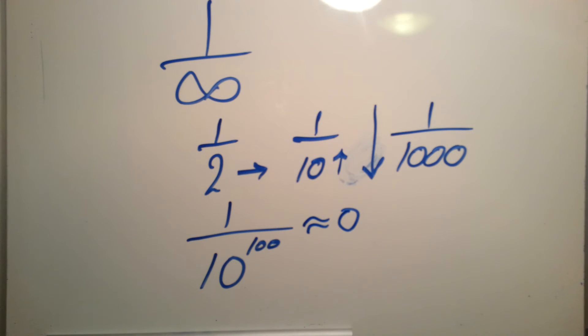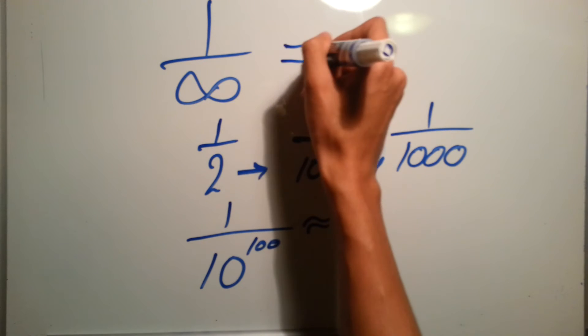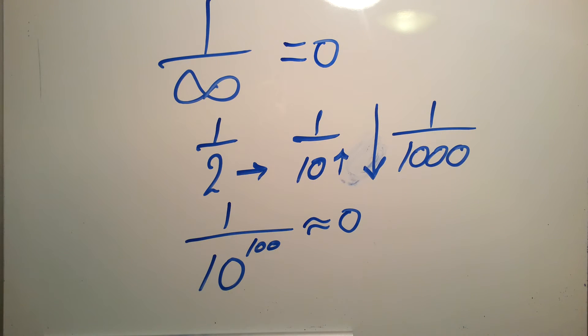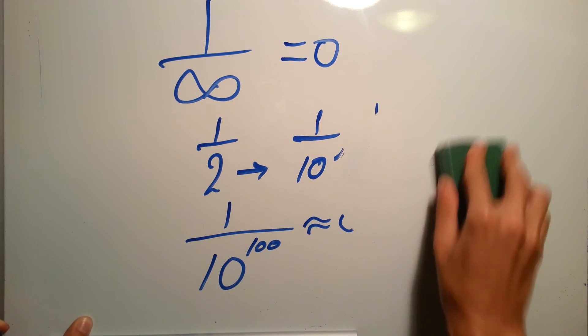So this basically means that one over infinity will equal zero. This is for someone who knows a little bit about math. But if he's too young to understand this, you can tell them...